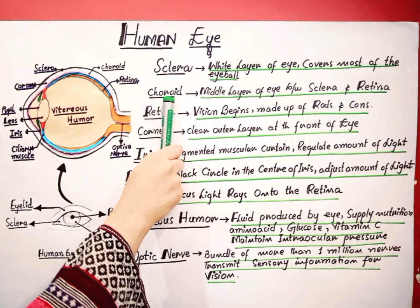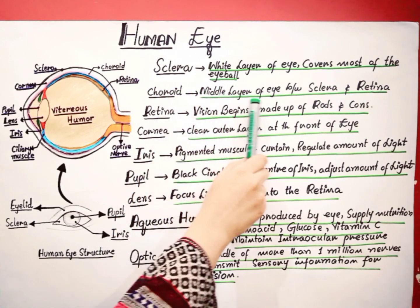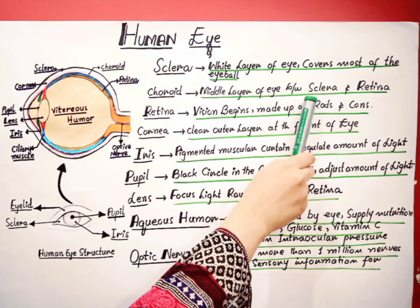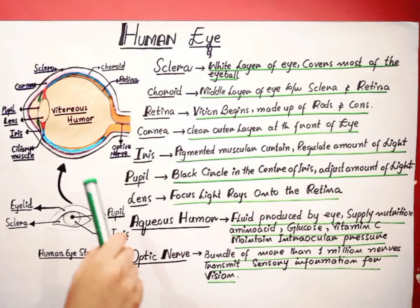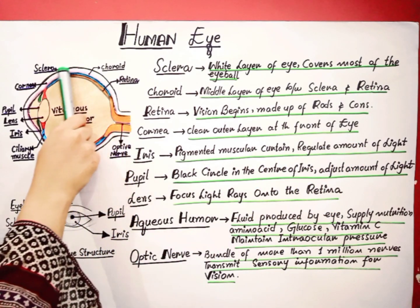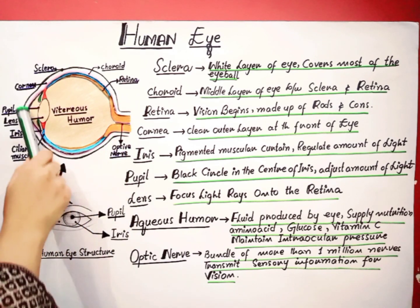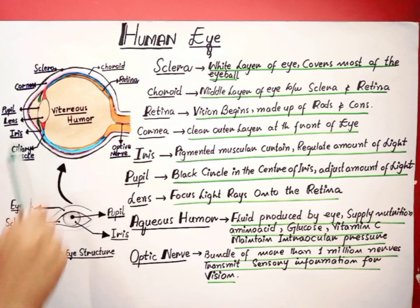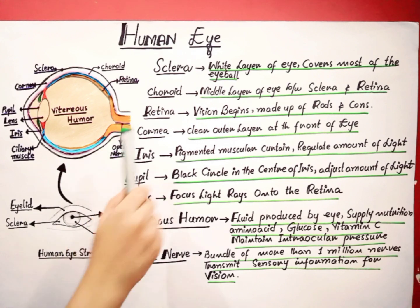The second layer is called the choroid. The choroid is the middle layer of the eye and it is present between the sclera and the retina. This pink color indicates the choroid. It is made up of blood vessels, and these blood vessels supply oxygen and nutrients to the retina.